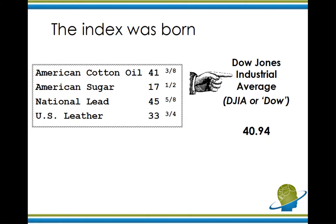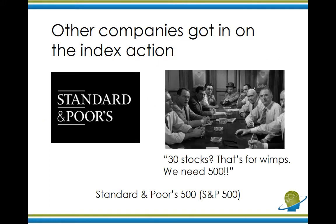Eventually the 12 stocks was expanded to a list of 30 stocks. So rather than look at the 30 stocks, you could just look at what the Dow is at every day. If the Dow is up, chances are the entire market of stocks is up, and if the Dow is down, the market's down. So Charles started the Dow Jones Industrial Average — the first index — as a way to get people to buy more newspapers. Over time, other companies got in on this index action.